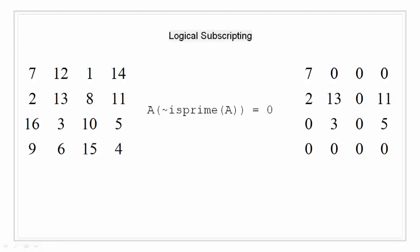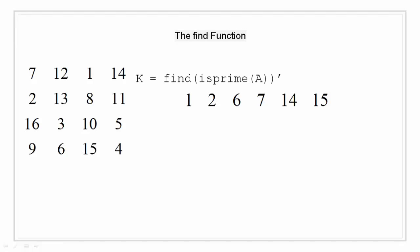The find function: The find function determines the indices of array elements that meet a given logical condition. In its simplest form, find returns a column vector of indices. When we transpose that vector, we get a row vector of indices. In this case, as shown on the screen, it picks out the location using one-dimensional indexing of primes in the matrix A. What we are seeing here—1, 2, 6, 7, 14, and 15—are not the elements inside the matrix, but they are the locations of matrix A where prime numbers are stored. At position 1, the prime number 7 is there. At position 2, we have 2, which is prime. At position 6, that corresponds to 13, which is prime. Position 7 corresponds to 3, which is prime. Position 14 corresponds to 11, which is prime. And position 15 corresponds to 5, which is also prime.